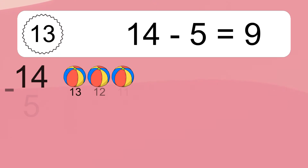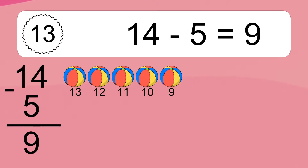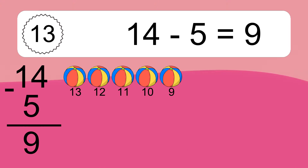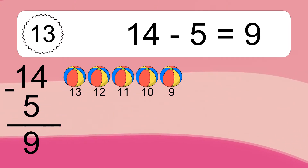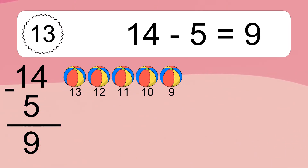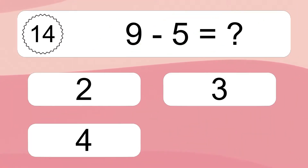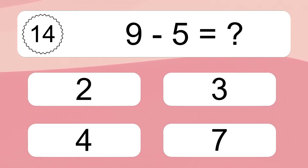14 minus 5 equals what? 14 minus 5 equals 9. Let's count it: 13, 12, 11, 10, 9.